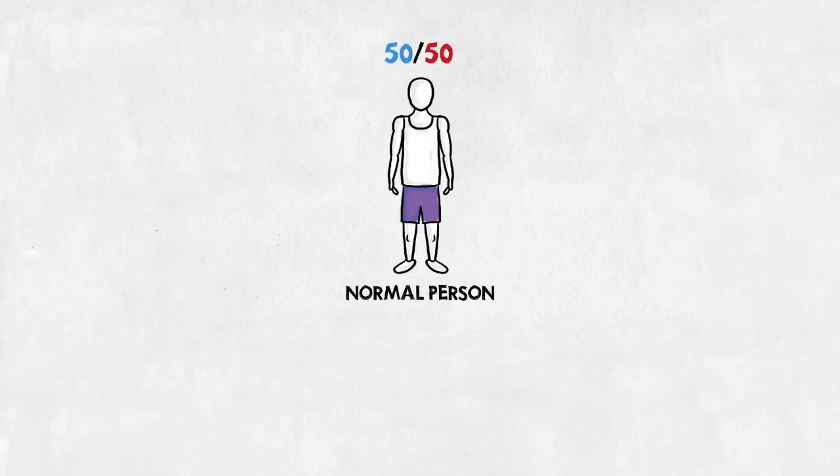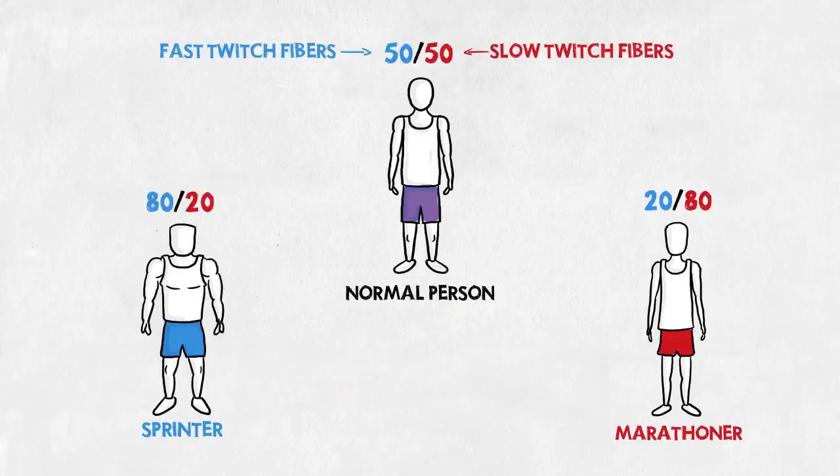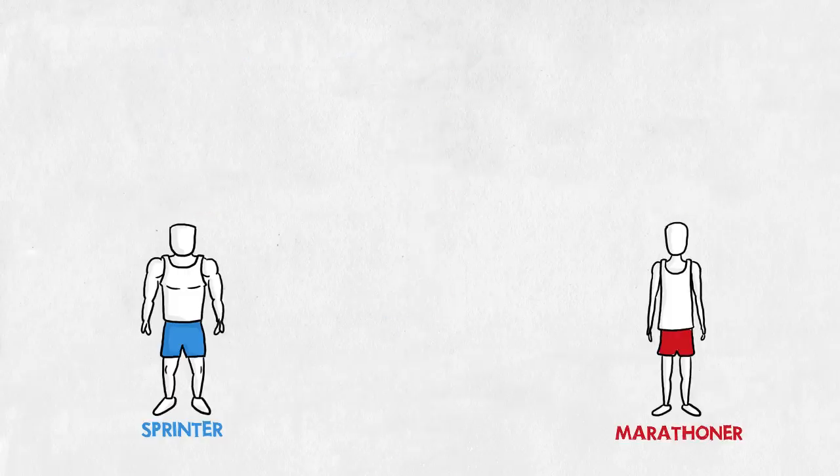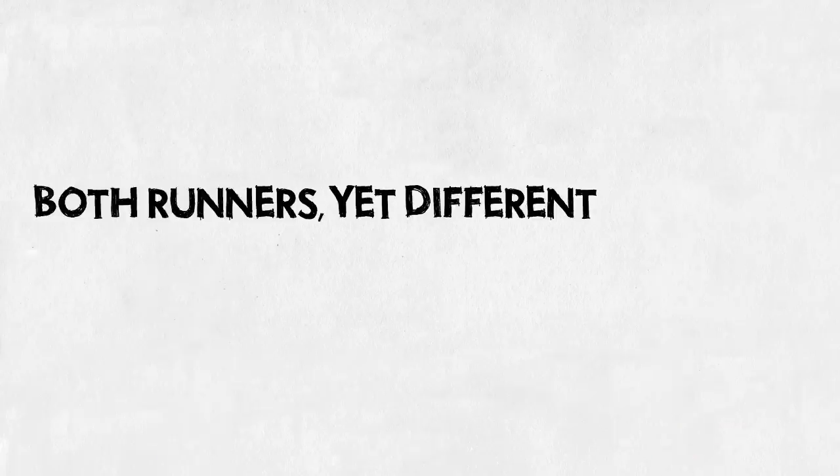On top of the difference in training, genetics also play a part. A normal person has about an even amount of fast and slow twitch fibers, but the persons that make it to the top tend to have more of one kind. So even untrained, they wouldn't have the same physical appearance. The sprinter and the marathoner: both runners, yet different athletes.